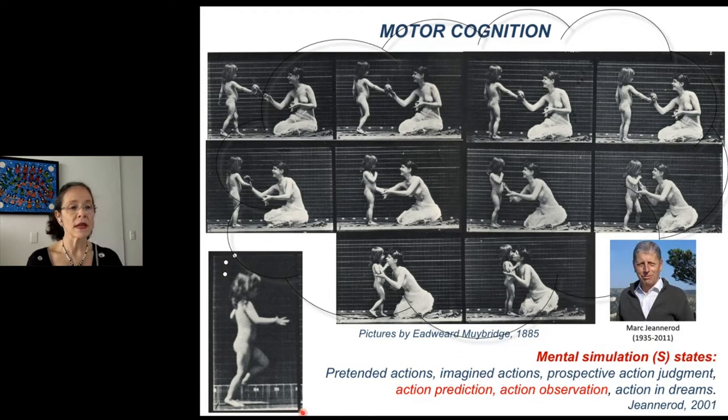Janerot called these states the mental simulation states or S states in which the brain actively simulates the motor execution and its outcomes. Following Janerot's ideas, S states would allow us to learn, rehearse and predict actions.